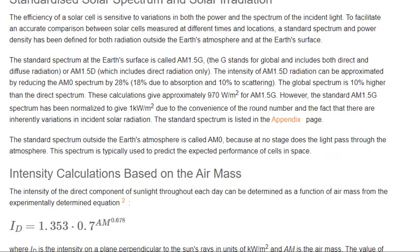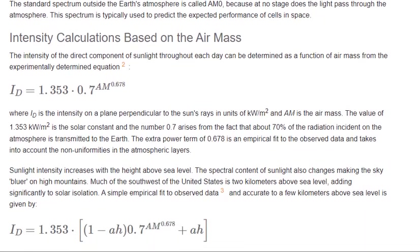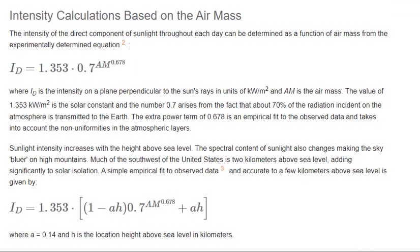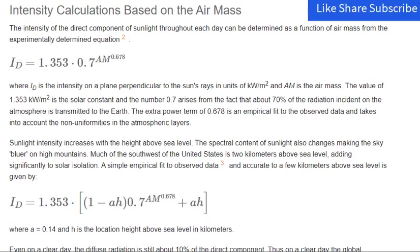Intensity calculations based on the air mass. The intensity of the direct component of sunlight throughout each day can be determined as a function of air mass from the experimentally determined equation, where ID is the intensity on a plane perpendicular to the sun's rays in units of kilowatts per square meter and AM is the air mass.